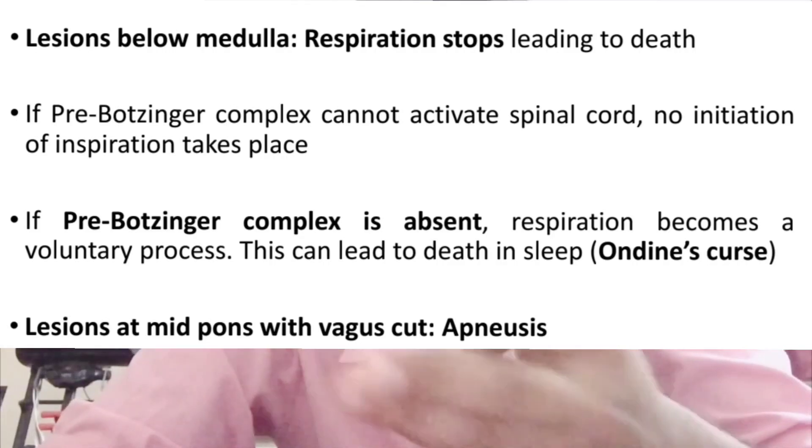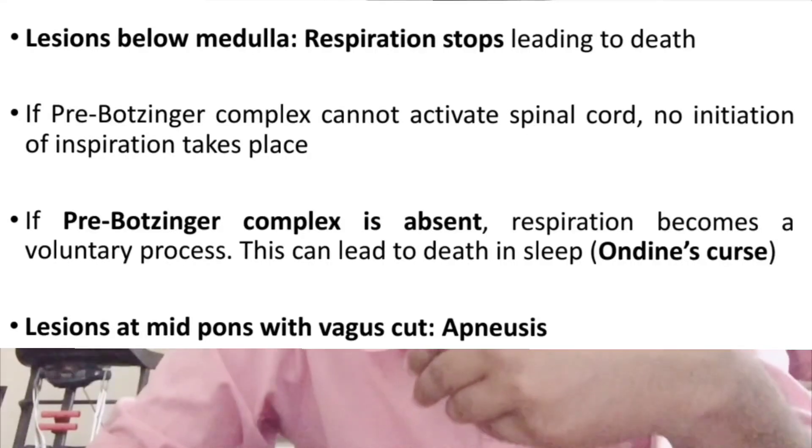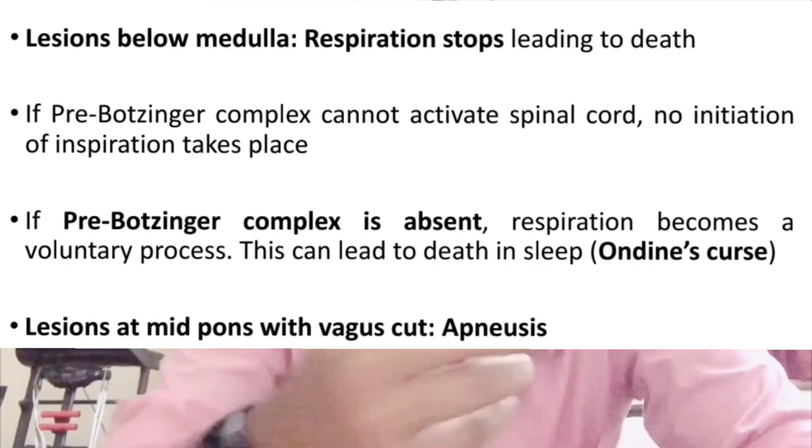If the pre-Bötzinger complex is damaged — due to hanging or direct spinal cord injury — the circuit sending impulses from the medulla to the spinal cord is disrupted. This can result in death, as breathing cannot be initiated automatically.